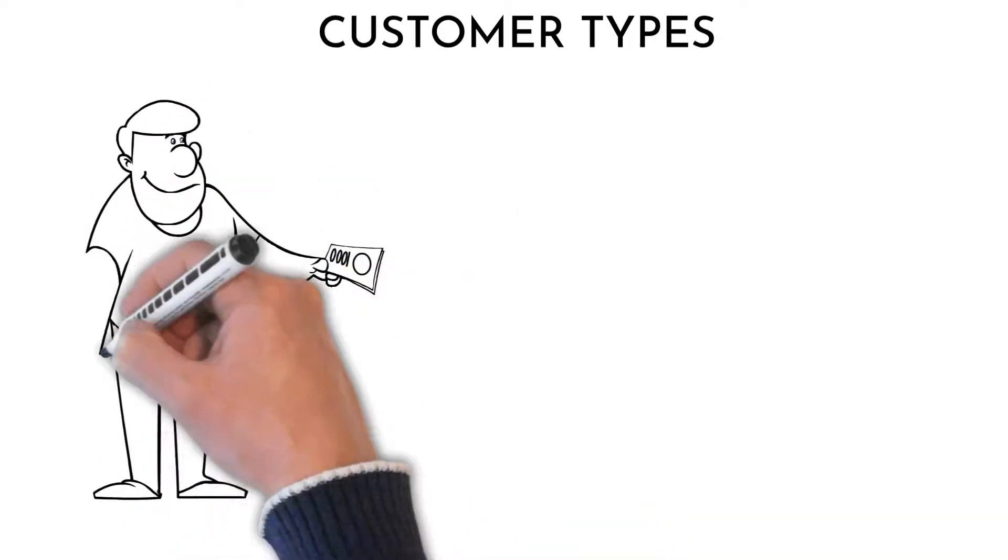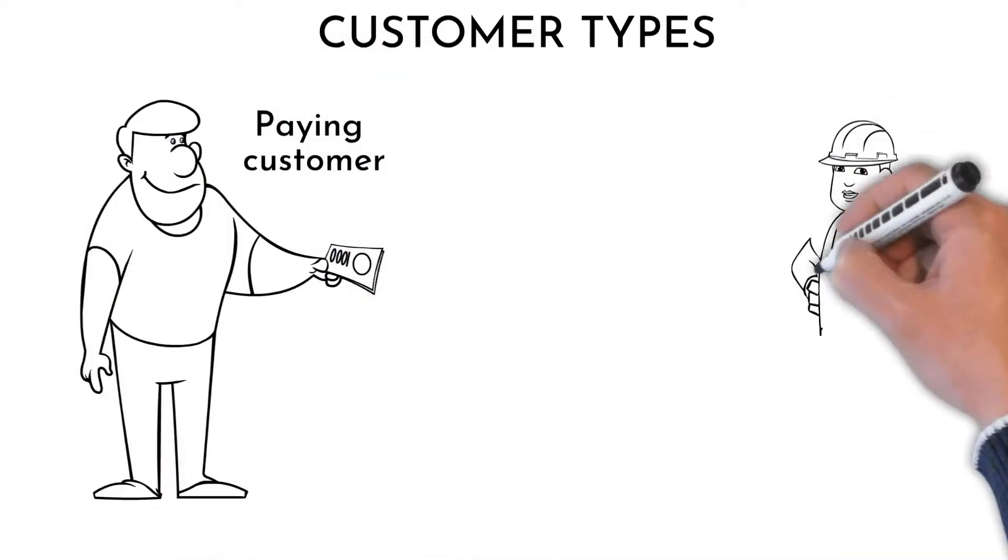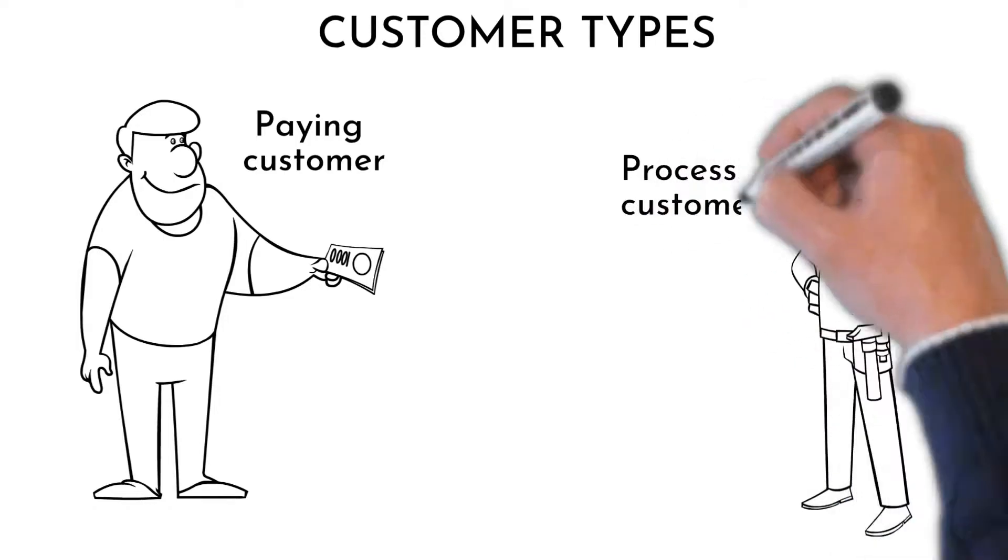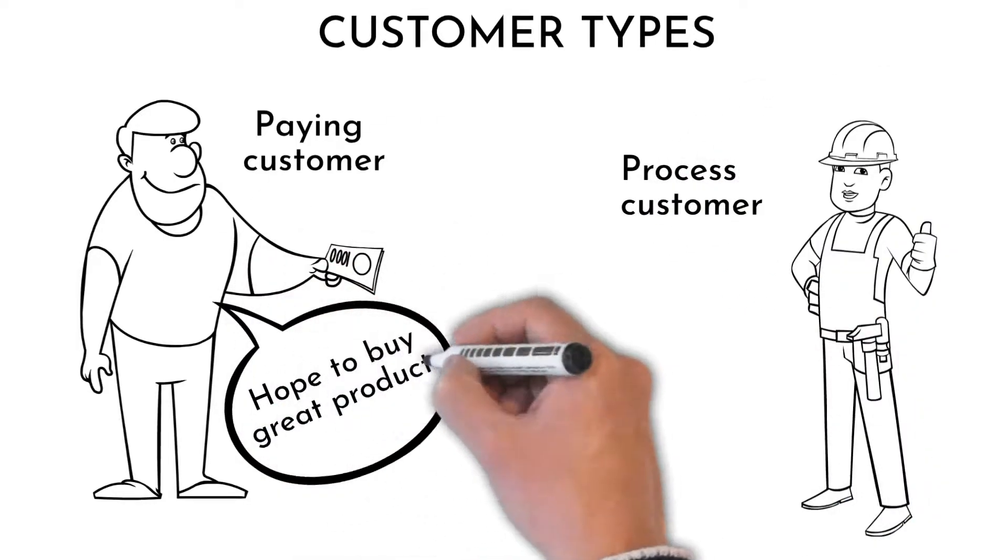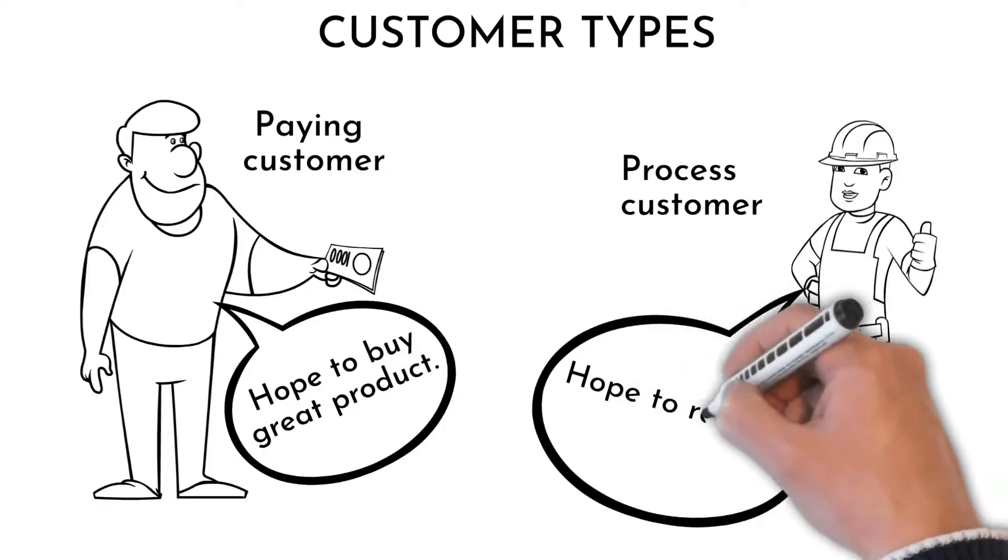There are two customer categories: one who comes to the store and spends his money; the other can be your colleague on the following process. Both must be treated the same way because we are influencing their lives by our product or process quality.